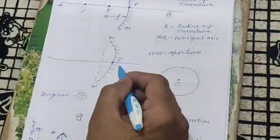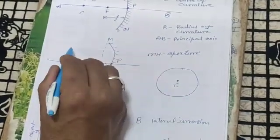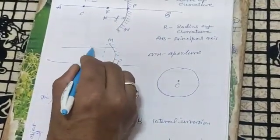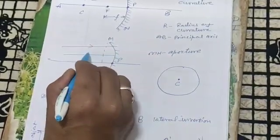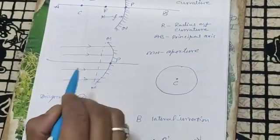And the next important term is aperture. Aperture means the space from which light rays can enter and falls on reflecting surface.